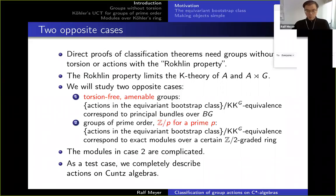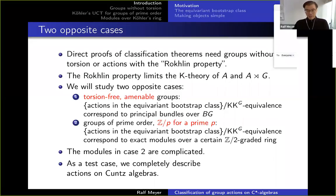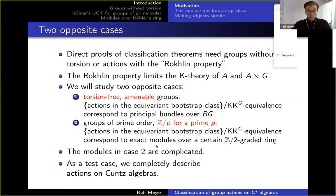In the case when you have torsion, the result is much more complicated. I look at actions in the bootstrap class up to KK equivalence, and now there is a certain Z₂-graded ring, and these actions correspond to exact modules over this ring — exact meaning that certain chain complexes which are part of the module structure are exact. With ordinary C*-algebras, if they are separable then their K-theory is countable, so you only get countable modules.